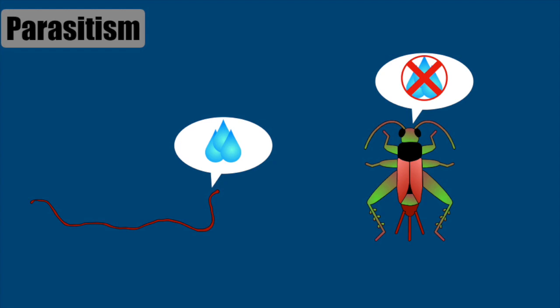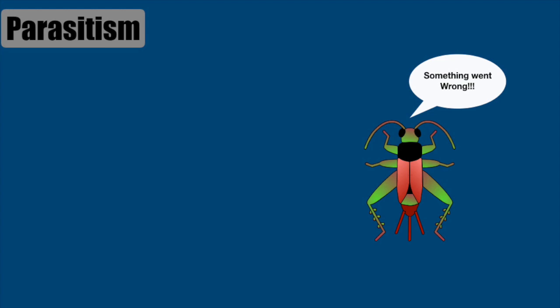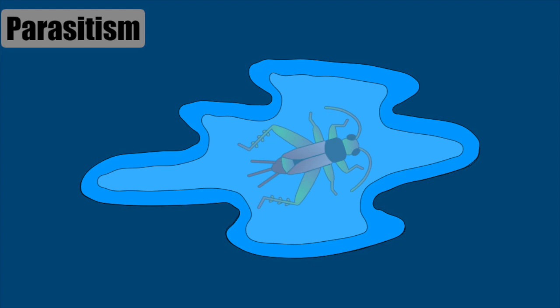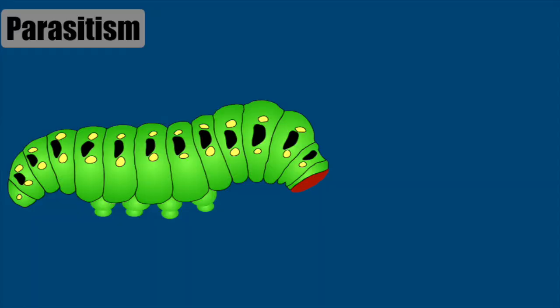So when the worm is inside cricket, it shuts down cricket's navigation system. Cricket gets confused and jumps around randomly, eventually reaching water. Once the cricket is inside water, Gordian worm tears the cricket's body to come out and lay eggs.